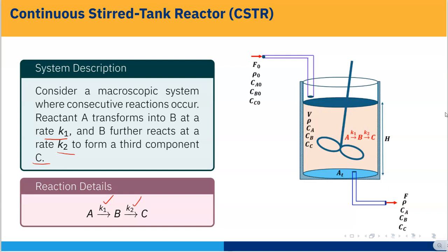In the CSTR, the inlet volumetric flow rate is F0 and the density of the inlet fluid is ρ0. Ca0 is the concentration of A at the inlet, Cb0 is the concentration of component B at the inlet, and Cc0 is the concentration of C at the inlet. Inside the CSTR, the liquid volume is V, density is ρ, Ca is the concentration of component A inside the liquid.